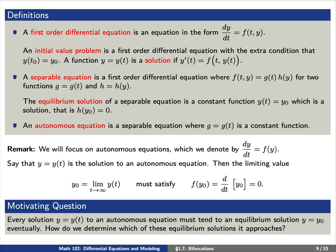An equilibrium solution of a separable equation is a constant function y(t) = y₀ which is a solution — that is, h evaluated at y₀ equals 0. An autonomous equation is a separable equation where g(t) is a constant function. Since we will focus on autonomous equations, we'll always write them in the form dy/dt = f(y); that is, we'll simply suppress the notation involving t.